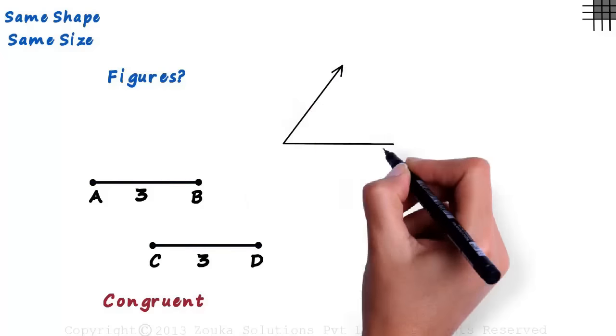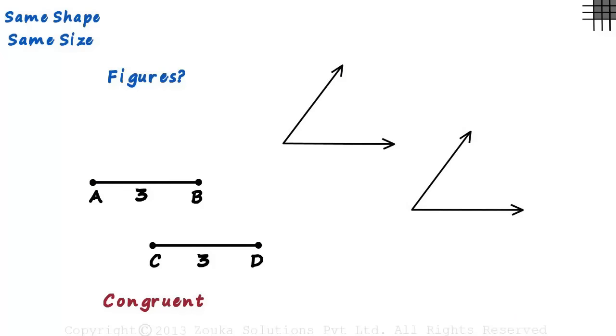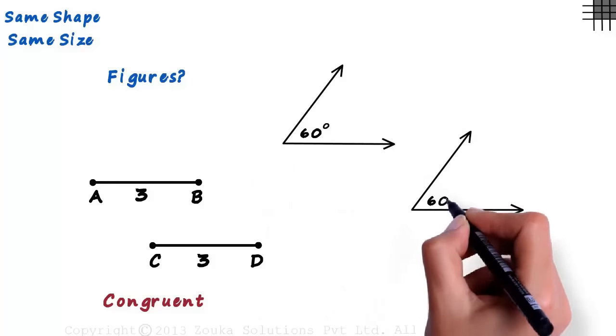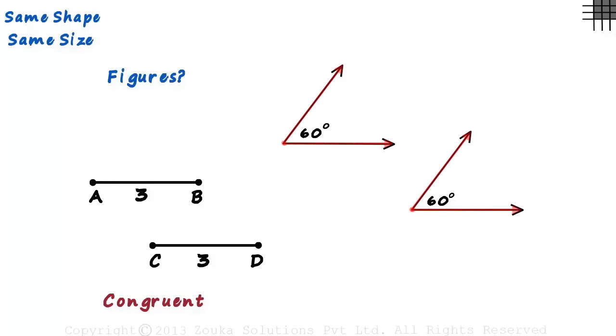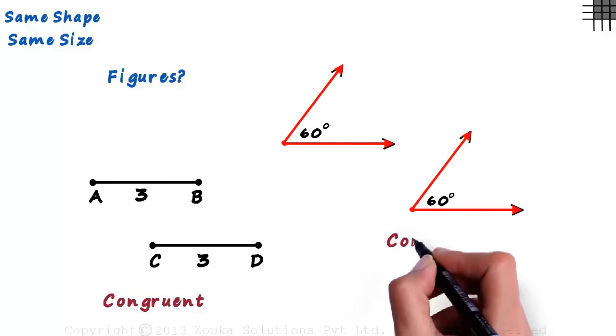What if we have two angles like this with the same measure? Say both measure 60 degrees. Yes, these two angles are also congruent.